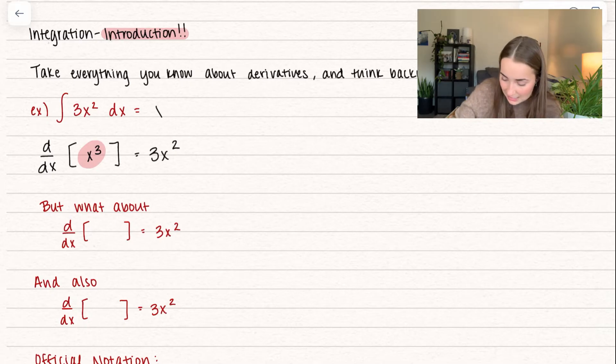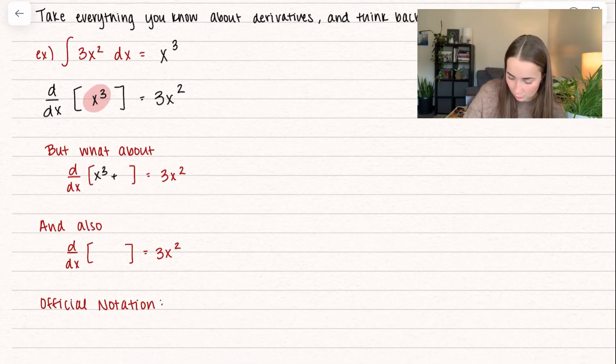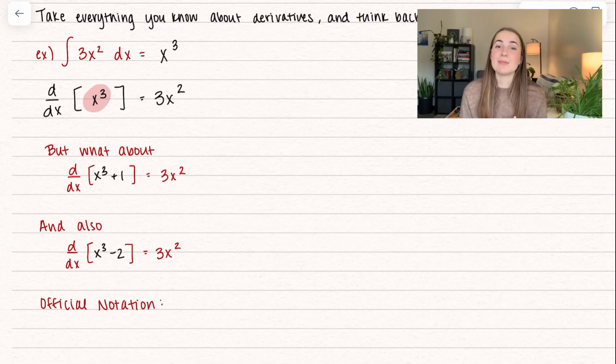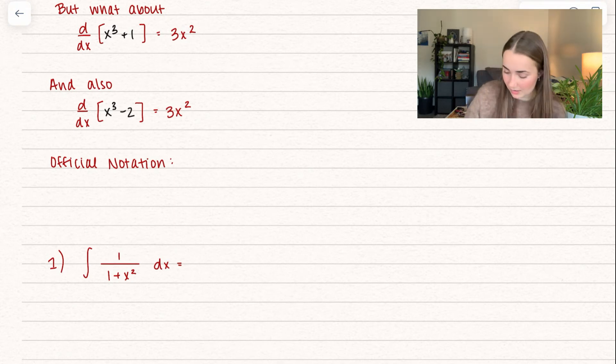And so that tells me that my antiderivative is going to be whatever we originally took the derivative of. So this is potentially x cubed. The reason I say potentially is because we can also take the derivative of x cubed plus 1, and we get 3x squared, right? I can take the derivative of x cubed minus 2, and I also get 3x squared. That's because the derivative of a constant, it just goes to 0.